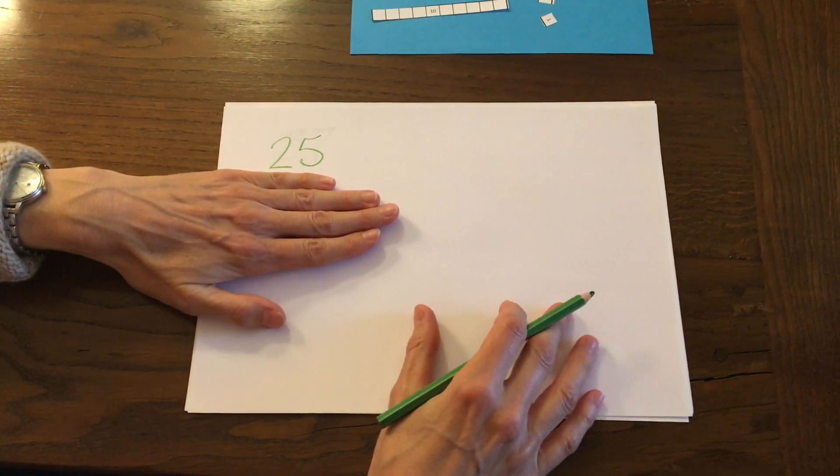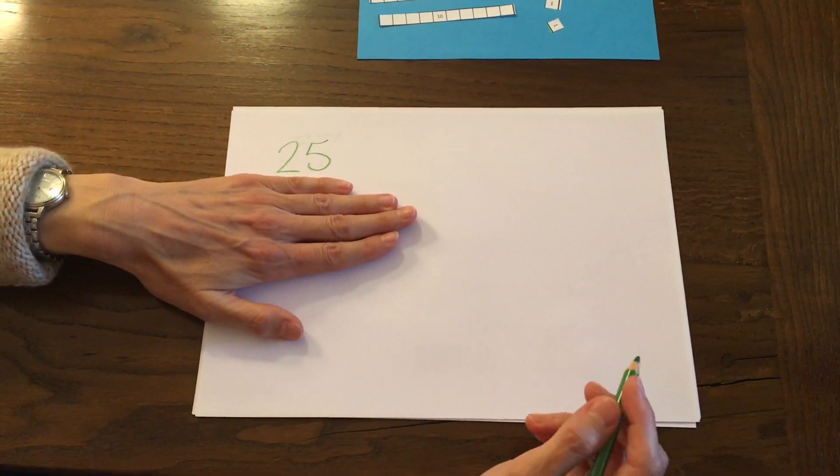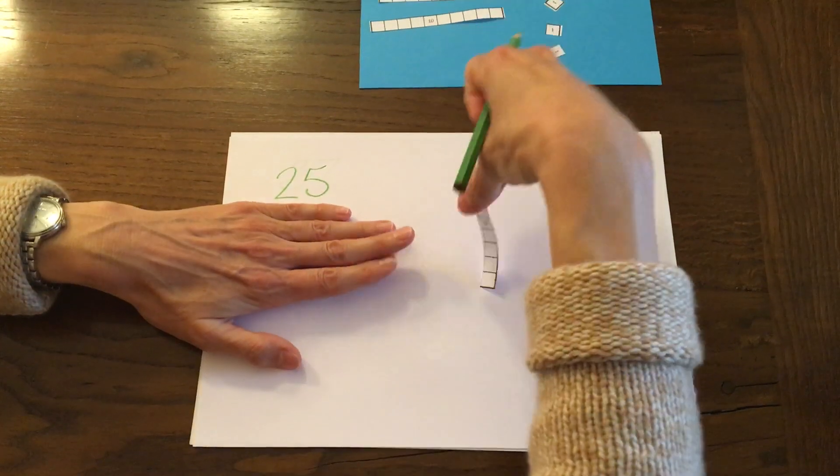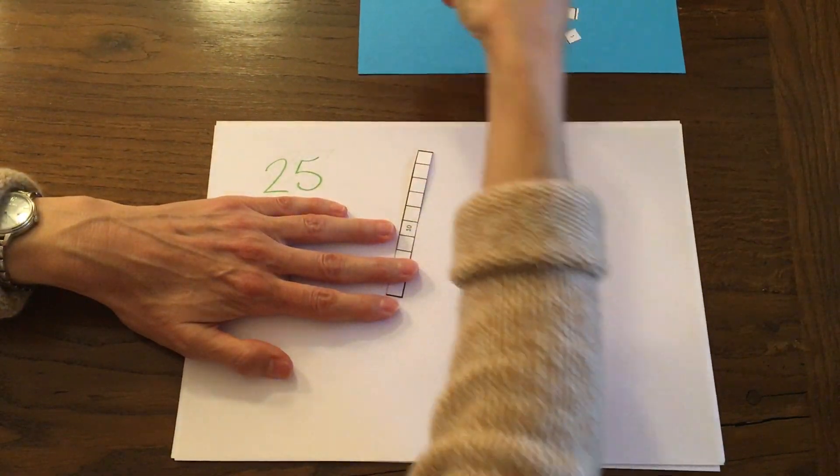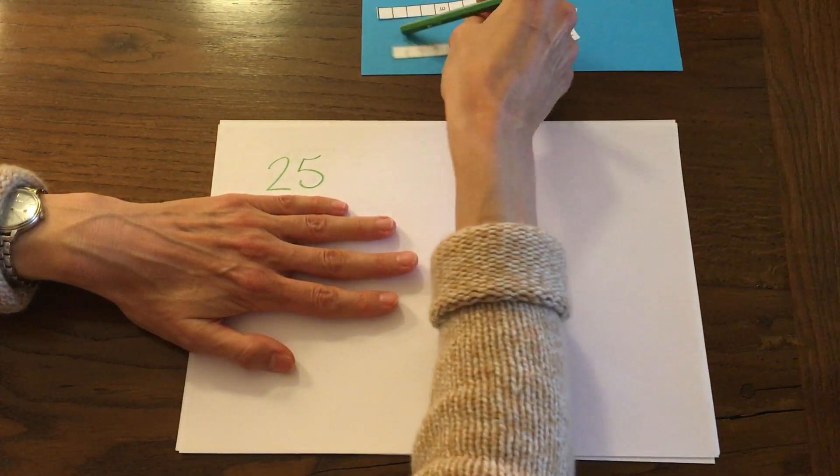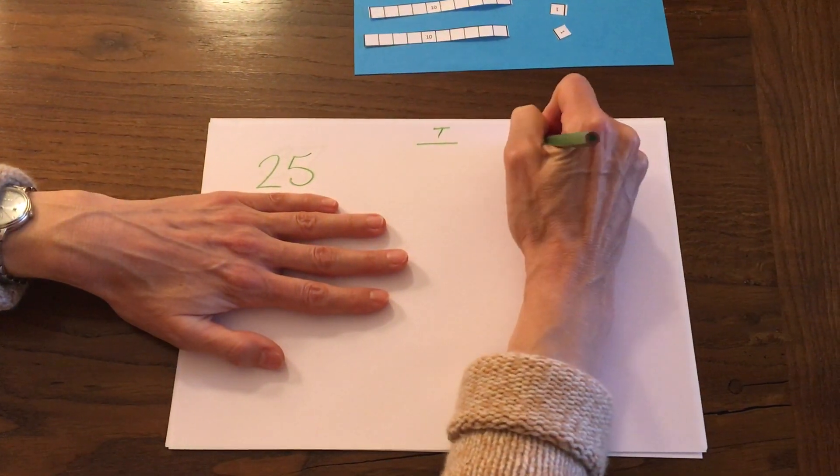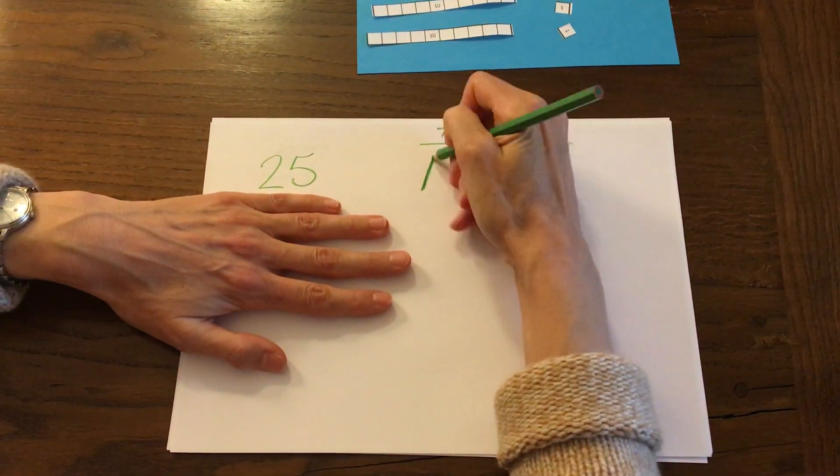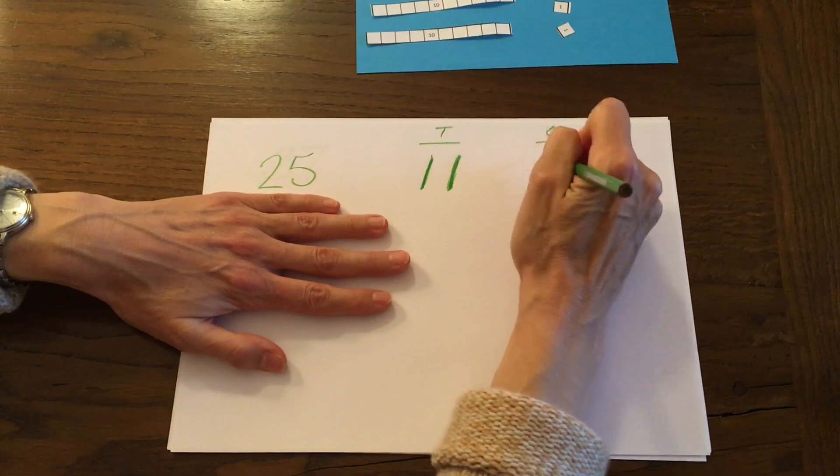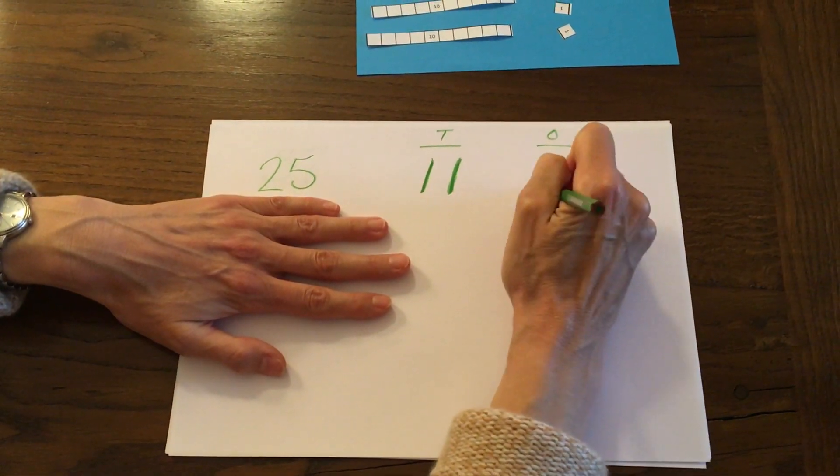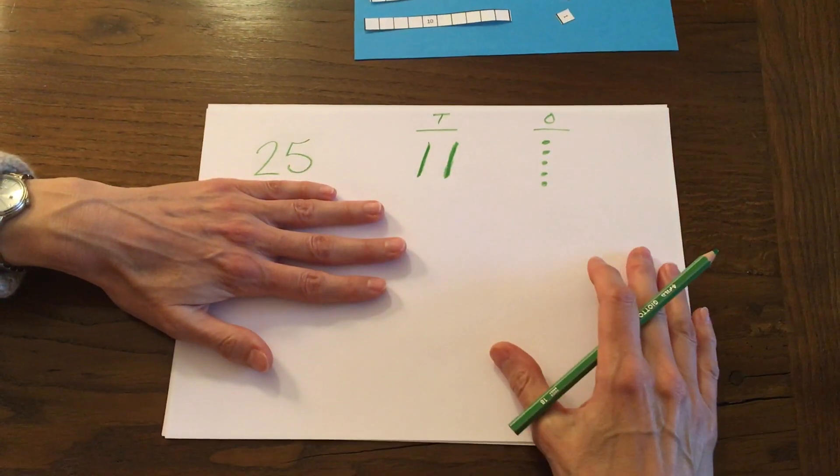So first we have 25 plus 4. Let's draw that 25. If we had the blocks we'd have two tens like that, but instead I'm just going to draw them. I'll put T for tens, O for ones. This is a ten and this is a ten, and then I have five ones. One, two, three, four, five, and I did them in a column of five like that.